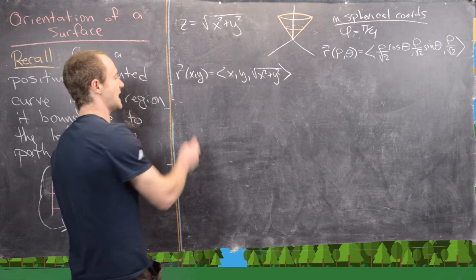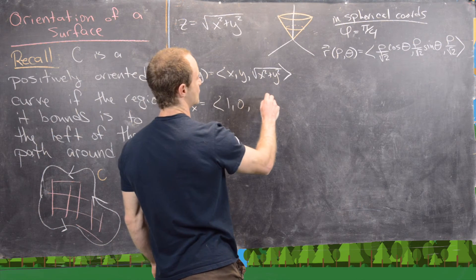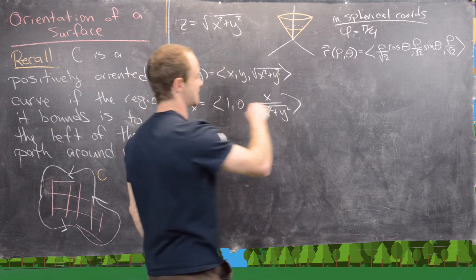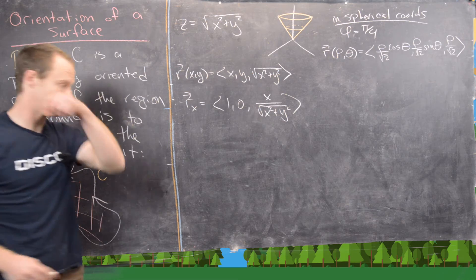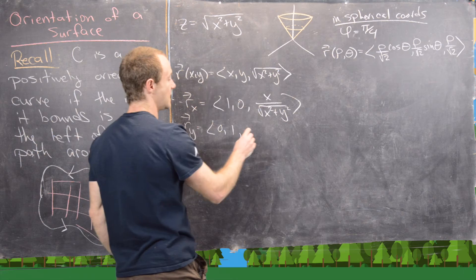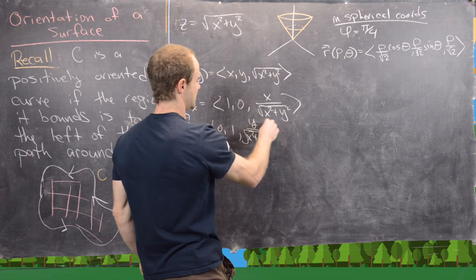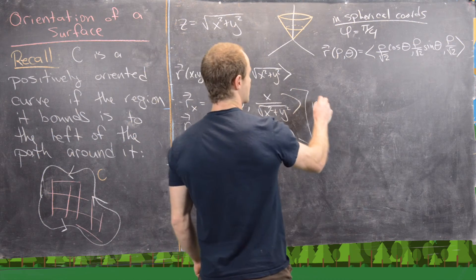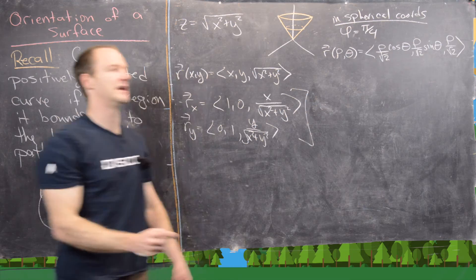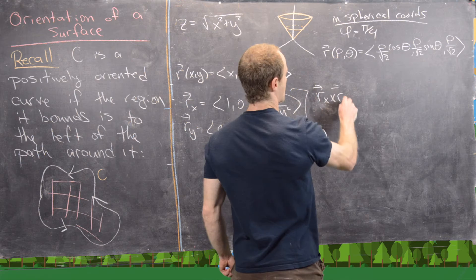Let's calculate the partial derivatives. R_x = (1, 0, x / sqrt(x² + y²)) using the chain rule. Similarly, R_y = (0, 1, y / sqrt(x² + y²)) using the chain rule. Now putting this together, let's go ahead and do the cross product R_x cross R_y.